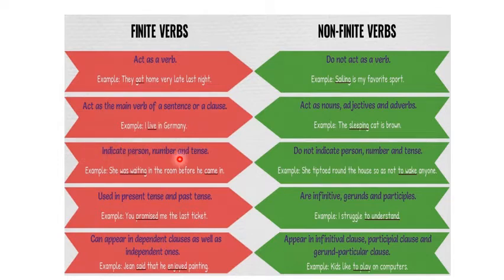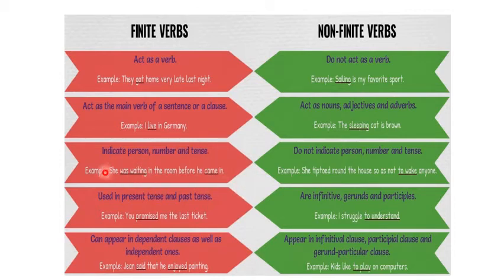Finite verbs indicate person, number, and tense, which means that finite verbs change according to the subject, according to the number of people, and according to the time of the action. For example: 'She was waiting in the room before he came in.' 'Was waiting' and 'came' are the finite verbs here. 'She' is one person, so it is 'was waiting.'